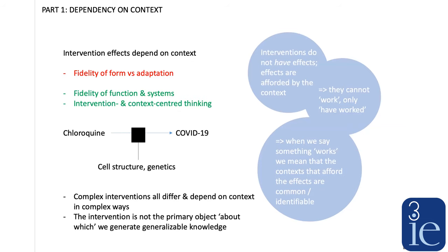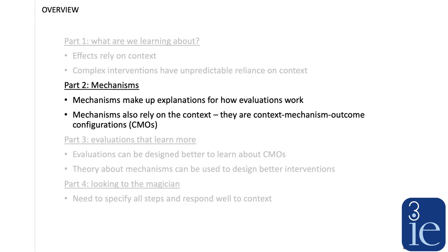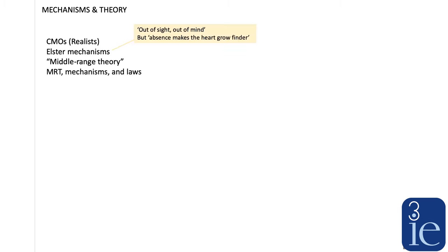Because complex interventions all differ and depend on context in complicated ways, the intervention is not the primary object about which we can generate generalizable knowledge. For most complex interventions we are evaluating, it's not meaningful to say that we've learned something about the intervention itself. So what is it that we can learn about? That brings us on to part two, which is about mechanisms.